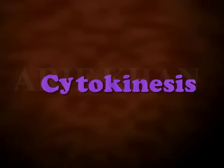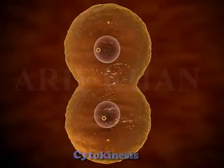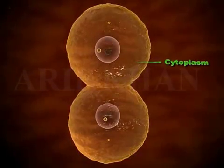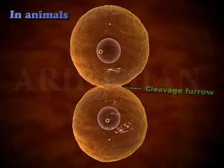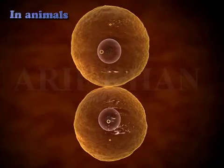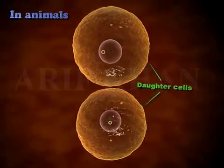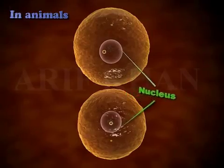Cytokinesis. Cytokinesis is the partition of the cytoplasm. In animals, a cleavage furrow appears in the plasma membrane, which deepens and divides the cytoplasm into two daughter cells, each containing a nucleus.